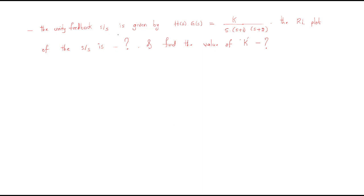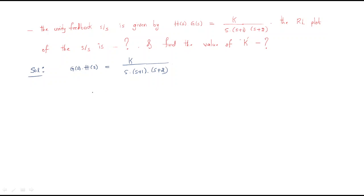Moving to the next problem: a unity feedback system is given by G(s)H(s) = K / [s(s+1)(s+2)]. We are asked to draw the root locus of the system and find the value of K. The open loop transfer function is G(s)H(s) = K / [s(s+1)(s+2)].